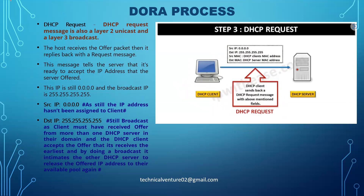The next message is the DHCP Request. The DHCP Request message is also a Layer 2 unicast and a Layer 3 broadcast message. In the Request, the client says it has received the IP address details, lease duration, subnet mask, and all other information. The client then sends a Request to the DHCP server asking it to allocate that specific IP address to the client's machine.